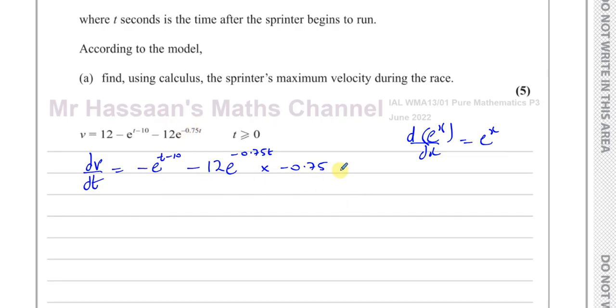That's called the chain rule when you have a function inside a function. So the main function differentiates by staying the same. What's inside the function, you have to multiply the differential of that by what you wrote down. And there we have the derivative dv/dt, which I'll just simplify. Minus e to the power of t minus 10. Negative times negative is positive. 0.75 times 12, that's 3 quarters of 12, which is 9. E to the power of negative 0.75t.